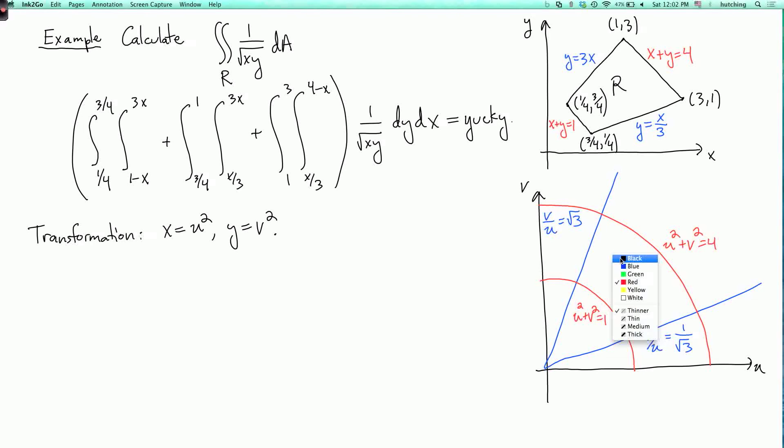And our region s is in here. So if we're being careful, we have to make sure that this transformation is a bijection. But if we stick with u and v positive, then it is a bijection because different positive numbers have different squares.